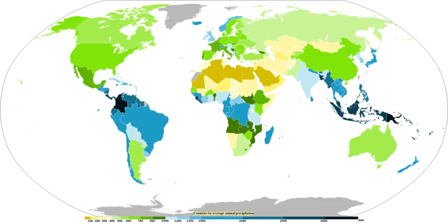Precipitation occurs when a portion of the atmosphere becomes saturated with water vapor, so that the water condenses and precipitates. Thus, fog and mist are not precipitation but suspensions, because the water vapor does not condense sufficiently to precipitate.